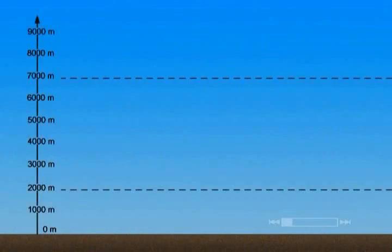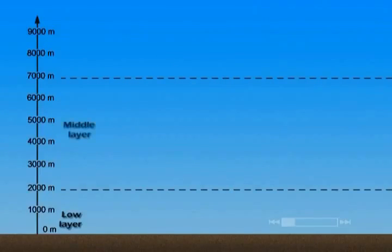For the altitude, they have divided the troposphere into three layers: the lower layer from zero to 2,000 meters, the middle layer from 2,000 to 7,000 meters, and the upper layer from 7,000 to 11,000 meters.